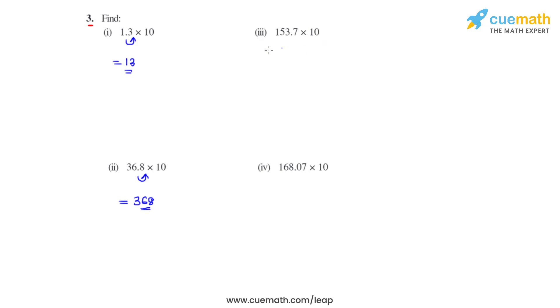Coming to the third bit, we have 153.7 multiplied with 10, so the decimal is moved one place towards the right, and the answer that we get for it is 1537.